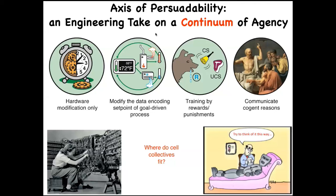Here are four basic examples. Simple machines: your only tool is hardware modification — you can't convince it of anything. Cybernetic circuits: you can reset their set point and let them maintain it. Then systems where rewards, punishments, and training apply. Then human-level metacognition and beyond. This I call an axis of persuadability — from the engineer's perspective: how do we get the system to do something it wasn't doing before?